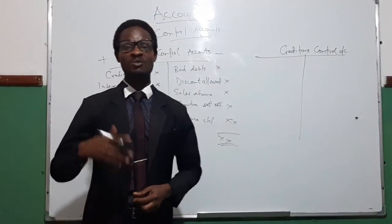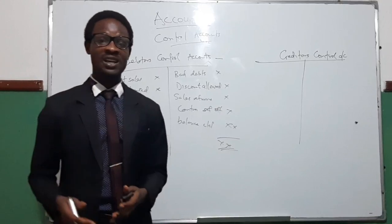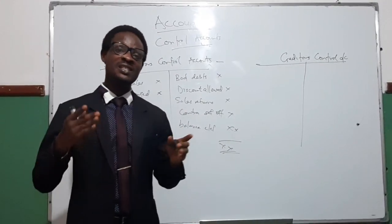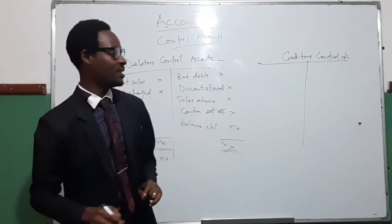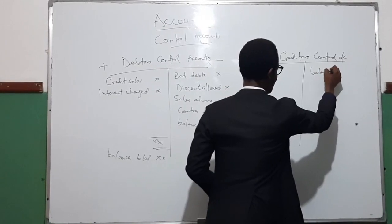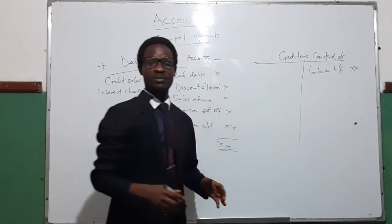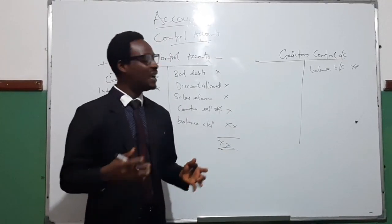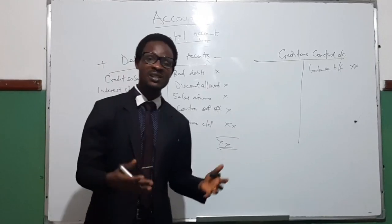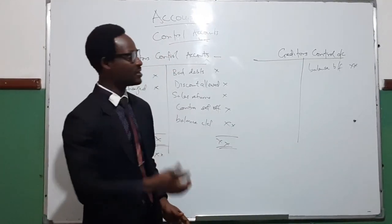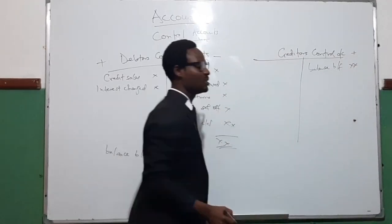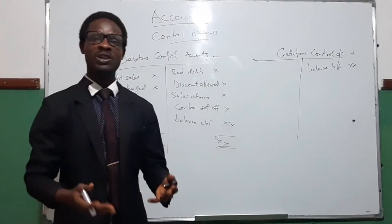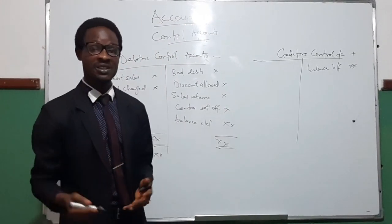For the creditors control account, which is the same thing as the purchase ledger control account, we show the value of creditors. From the word 'credit,' creditors will normally have a credit balance, so the balance brought forward is on the credit side. Any transaction that will increase the value of creditors will be in the credit side of the creditors control account — an example is credit purchases. When the business purchases goods on credit, it will increase the amount of creditors that the business has.